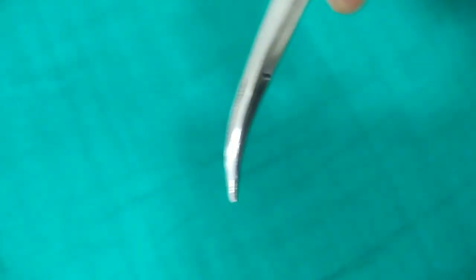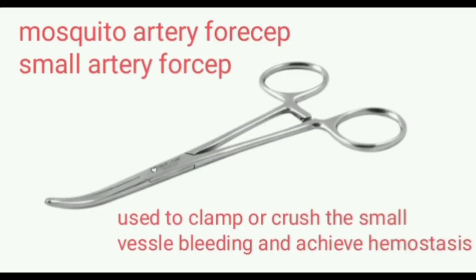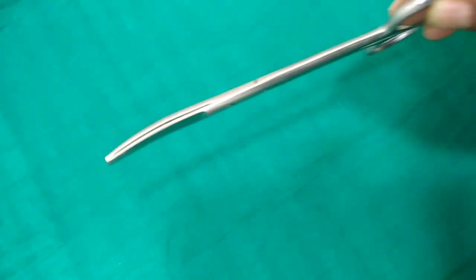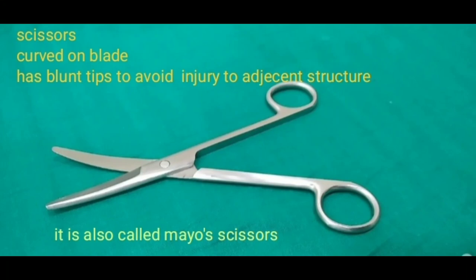This is a mosquito artery forcep. It is a small artery forcep; small artery forceps are also called mosquito artery forceps. It is used to achieve hemostasis and to hold small bleeding capillaries and vessels, and may be useful to stop bleeding from a vessel or tissue. It has a curved blade with transverse serrations, and other body parts are as usual.